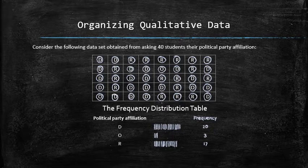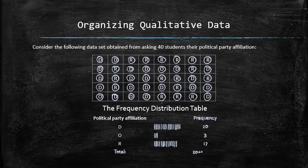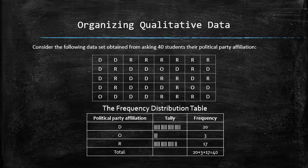One way to validate the table is to find the total — that is, add the entries in the frequency column and check whether the sum is equal to the sample size. Using tally can save us a lot of time when constructing a frequency distribution table, because when using the tally method you would only have to browse through the dataset once. Try not using the tally and you'll see what I mean.